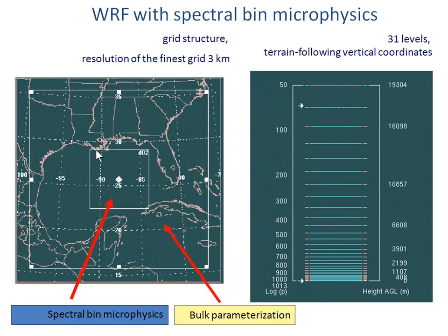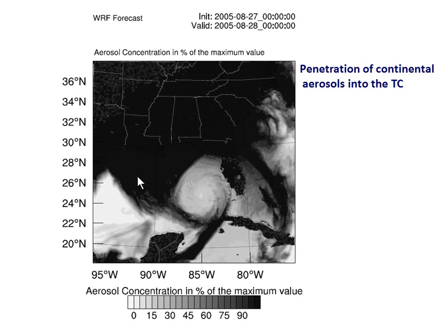The computation area is shown here. The spectral bin microphysics is used, because of computational limitations, only within the innermost area. This grid is movable, so it moves together with the tropical cyclone. The resolution is three kilometers — of course it's better to use finer resolution, but we used three-kilometer resolution.